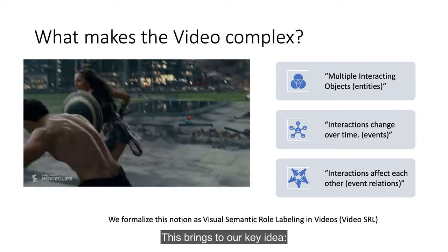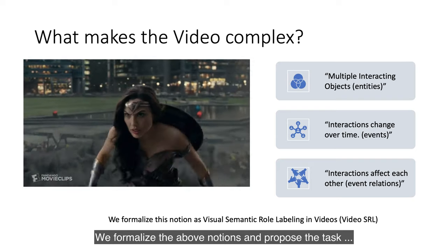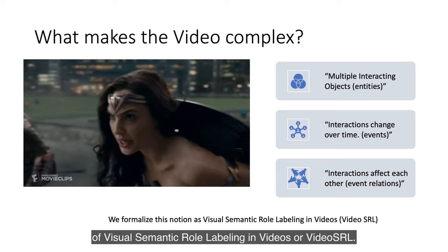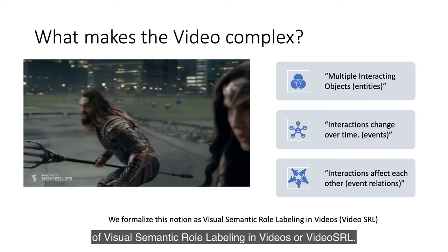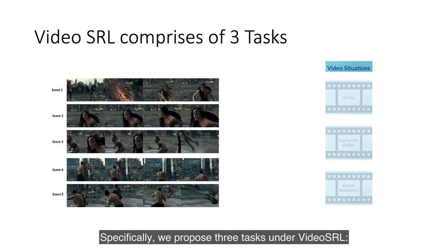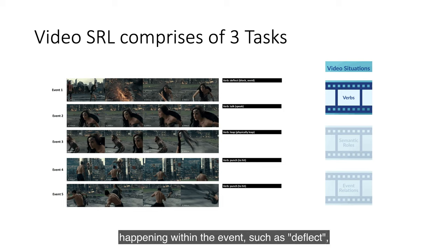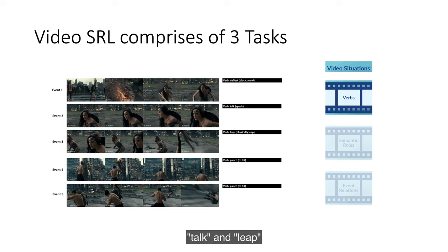This brings us to our key idea. We formalize the above notion and propose the task of Visual Semantic Role Labelling in videos, or Video Semantic Role Labelling. Specifically, we propose three tasks under Video SRL. The first is Verb Prediction, where we assign a verb sense to identify the most salient thing happening within the event, such as deflect, talk, or leap.